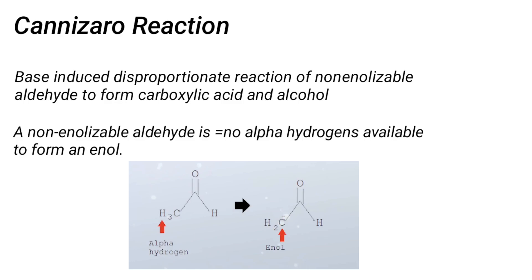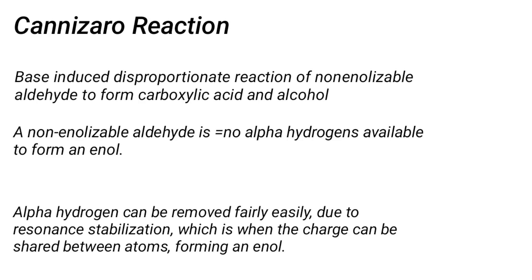In the image you can see how an enol is formed if there is an alpha hydrogen atom. Alpha hydrogen can be removed fairly easily due to the resonance stabilization, which is when the charge can be shared between atoms forming an enol.